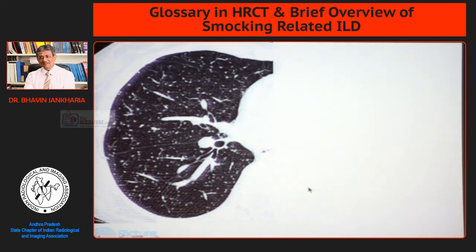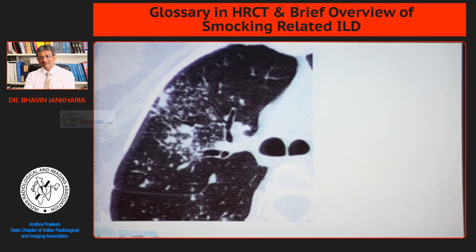There are a few other discrete nodules to know about. Two to three millimeter discrete nodules of the same size randomly distributed throughout the lung parenchyma would be miliary tuberculosis. Then there is a combination of discrete and ill-defined nodules that are focal and confluent — we call these bronchocentric nodules and use the term infectious bronchiolitis. The earlier term for this was tree-in-bud.